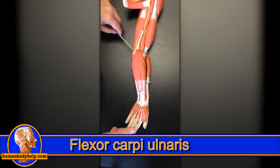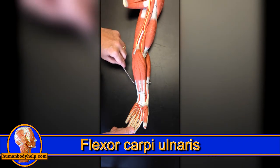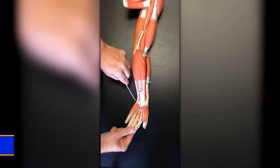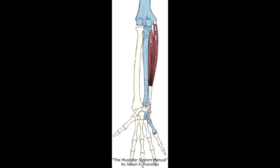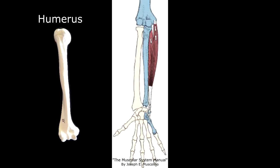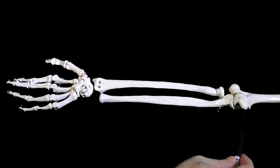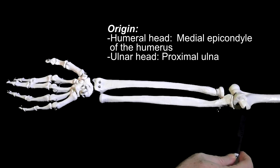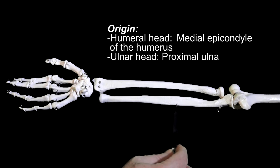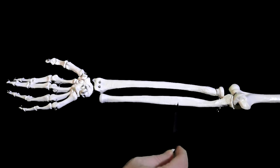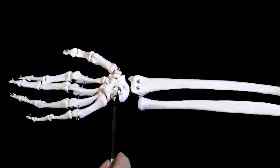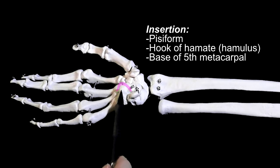The last of the superficial anterior forearm muscles is the flexor carpi ulnaris. This is also a two-headed muscle that attaches to the humerus, ulna, and hand. Specifically, the thick humeral head originates from the medial epicondyle of the humerus, and the thinner ulnar head originates from the shaft of the ulna. The heads converge and insert onto three structures: the pisiform, the hook of the hamate, and the base of the fifth metacarpal.